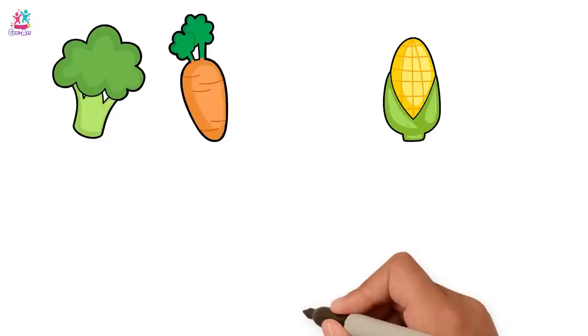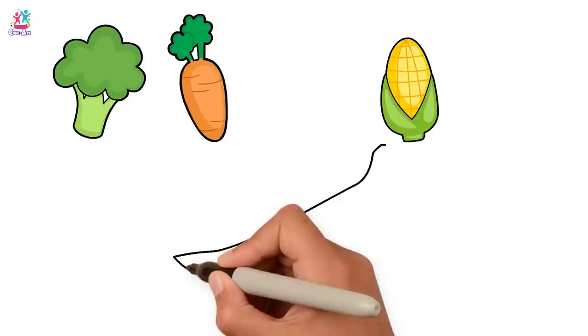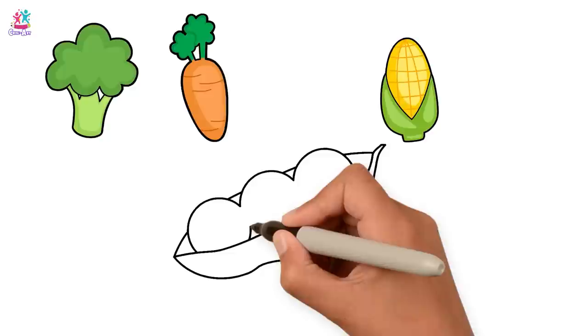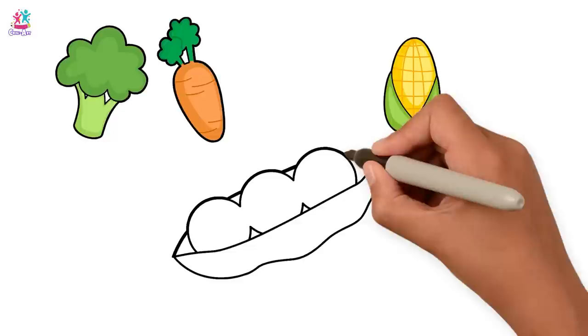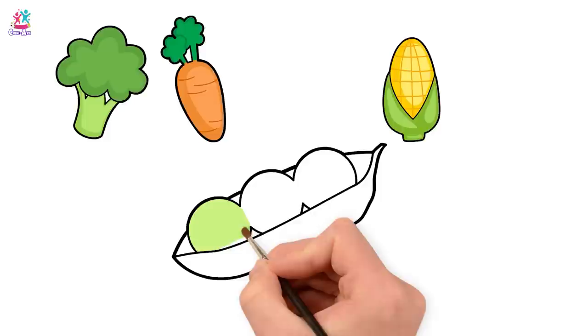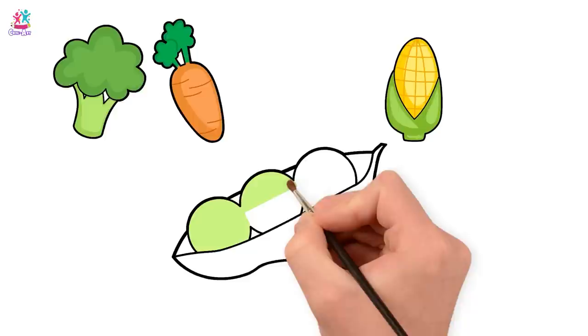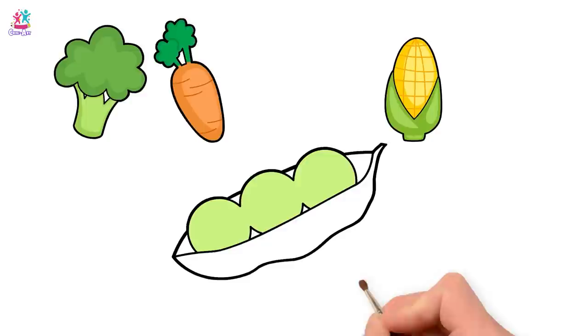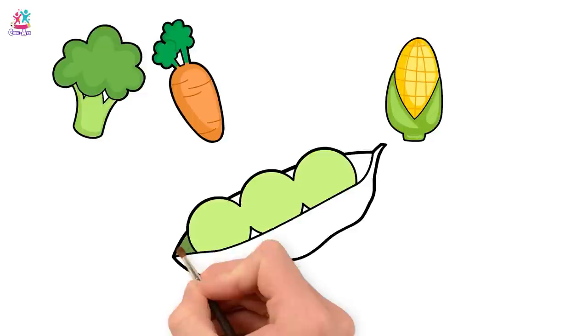Next is... Can you guess? Green peas. Time for the outline. Let's color it green. Neatly.